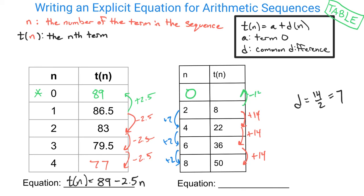And if we did that here, you're going to get negative 6. Which means our rule, if we follow what we have above, is t(n) = negative 6 + 7n. Not 14, but 7 because, remember, you're doing 14 divided by 2 to get you 7.